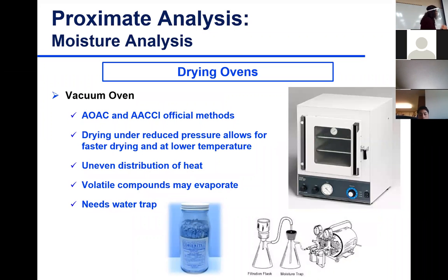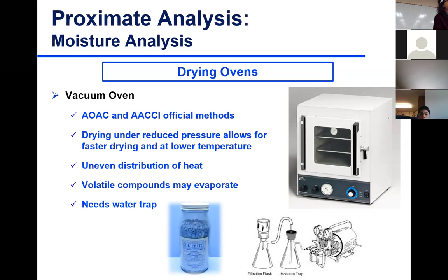Vacuum oven is another official method of analysis for many food products. The advantage is that you're drying under vacuum. When you apply vacuum, the boiling temperature of water decreases, so you can evaporate moisture at a lower temperature or more quickly. If we put it at 70°C overnight, you can get efficient removal of moisture.